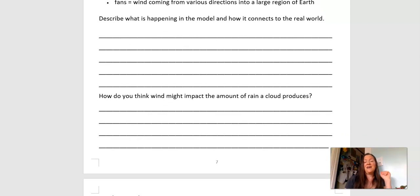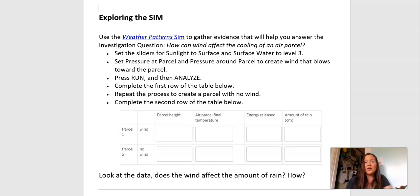And then how do you think wind might impact the amount of rain a cloud produces based on what we've learned so far? Now we're going to look at how wind functions by using the sim. So in our weather patterns sim, we're going to gather some evidence about exactly how the wind can affect the cooling of an air parcel. So we've got some instructions in our packet of how we're going to set up the sim. We've got a table that we're going to collect some data on. Okay, so here's our table. Here's our directions. So I'm going to get the sim up, and then we're going to walk through it together.